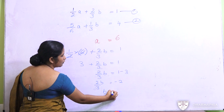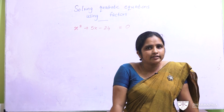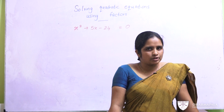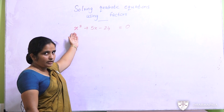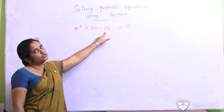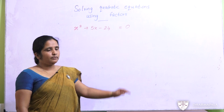Now we are going to learn how to solve quadratic equations using factors. You have learned how to solve simultaneous equations; now we are going to learn how to solve quadratic equations. In quadratic equations we have square terms. Look at this: x squared plus 5x minus 24 equals 0. The first thing you should know is that in quadratic equations we have two solutions, because we have an x squared term, so we will get two answers for x.